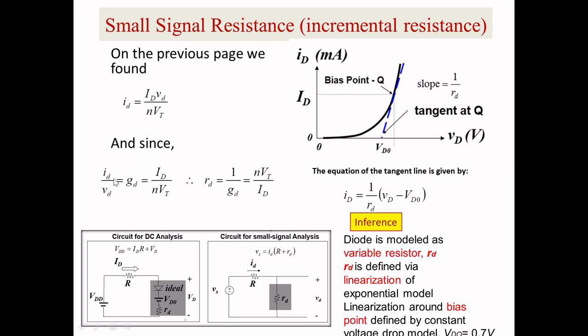From this, I can write id by vd equals GD, the conductance. When you rearrange and manipulate this equation, RD is nothing but 1 by GD, which equals eta VT divided by ID. Eta is an empirical factor, a material-based parameter that varies from 1 to 2.